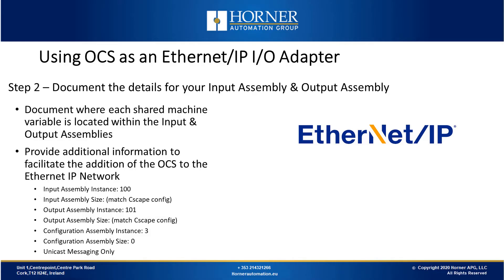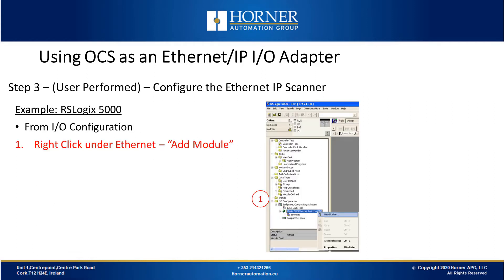Now we'll look at Step 2, which is documenting the details of your input and output assembly. We'll document where each shared machine variable is located within the input and output assemblies, then provide additional information to the customer to facilitate the addition of the OCS to the Ethernet IP network. Step 3 is for the user to configure the Ethernet IP scanner, for example a Rockwell scanner. These steps are required in the Rockwell software, and the software will vary for different scanners.